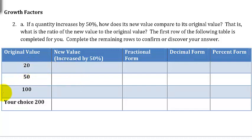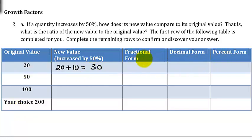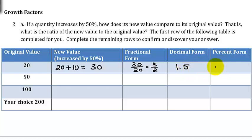Our original value is 20. 50% of 20 is 10, so the new value would be 30. In the last three columns we write the fraction, decimal, and percent form of the ratio. The new value to the original value is 30 over 20, which reduces to 3 halves. In decimal form, 3 divided by 2 is 1.5, and as a percent that is 150%.